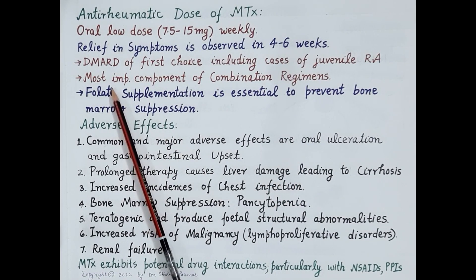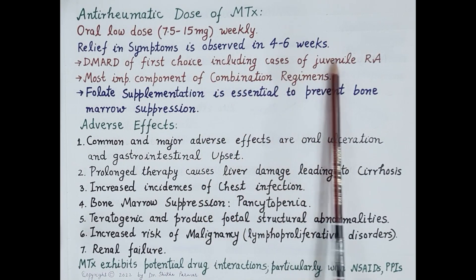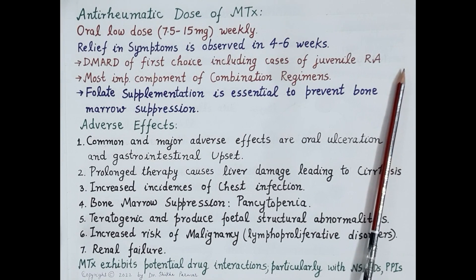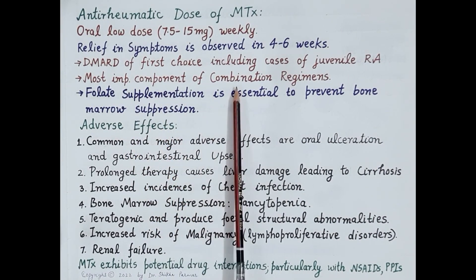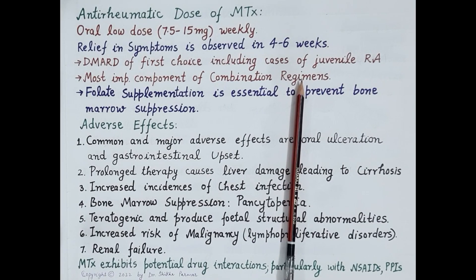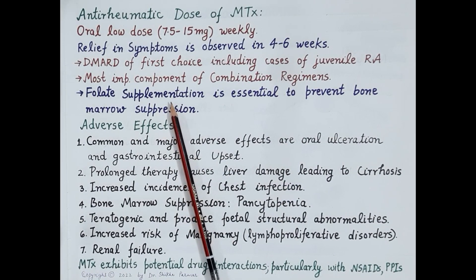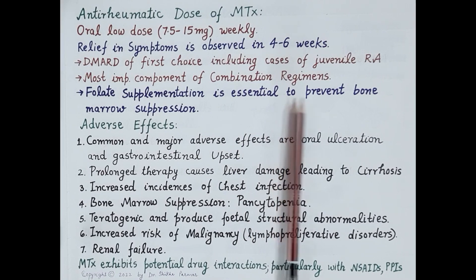Methotrexate is the non-biological DMARD of first choice in the treatment of rheumatoid arthritis, including juvenile rheumatoid arthritis. It is also an important component of combination regimens which are frequently used in rheumatoid arthritis.